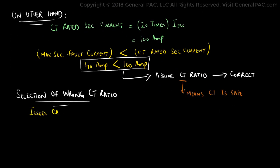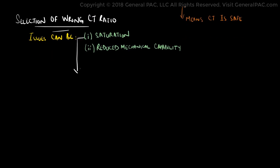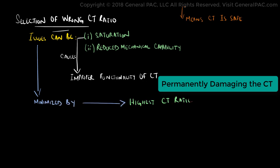On the other hand, we can face issues like saturation and reduced mechanical capability by applying the wrong CT ratio. Saturation can cause improper functioning of the CT, and even permanent damage in the worst case scenario. These effects can be minimized by using the highest CT ratio that is compatible with the system.